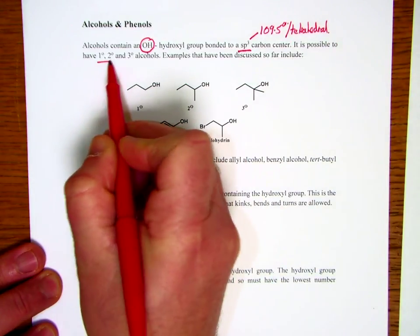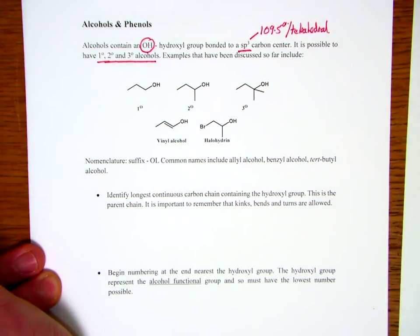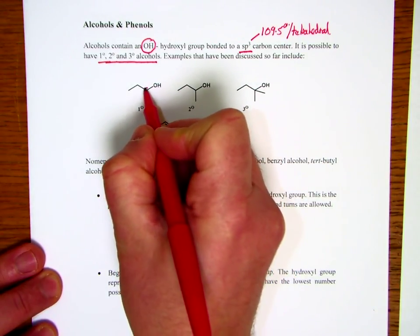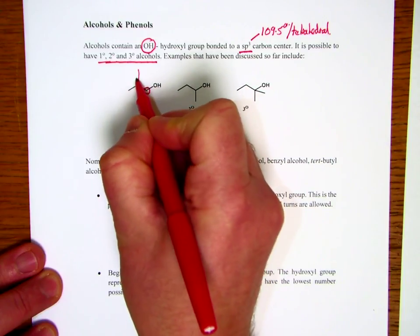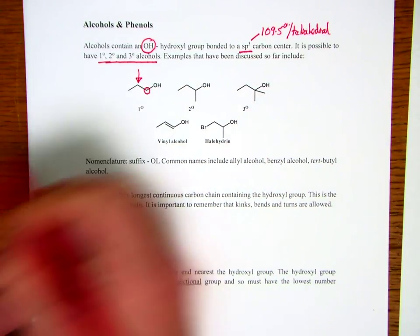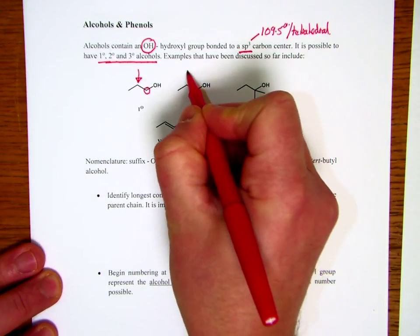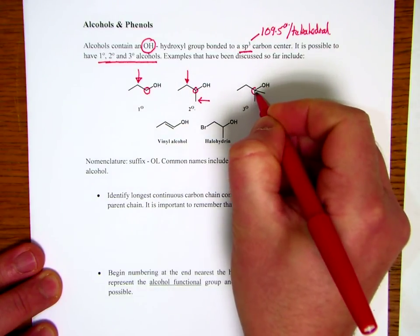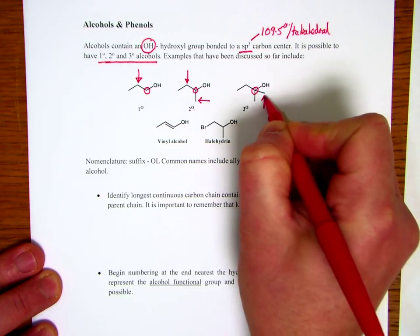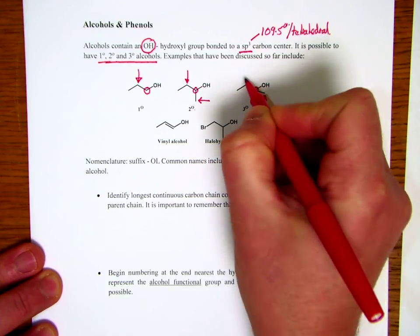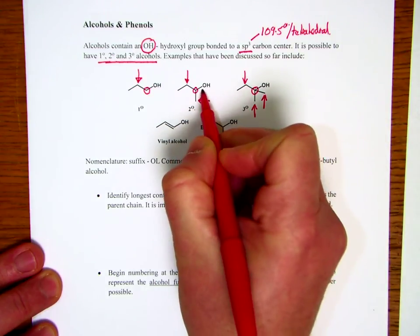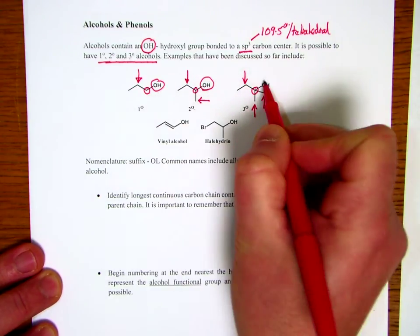It is possible to have primary, secondary, and tertiary alcohols, as we've seen before from our previous class. Here's a primary alcohol, because this carbon is attached to only one carbon. If we look at this carbon, it's attached to two carbons directly, and so it's a secondary alcohol. And then finally over here, we have an example of a tertiary alcohol, in which there are three carbons directly attached to the carbon bearing the hydroxyl group. I want to emphasize it is the carbon bearing the hydroxyl group.